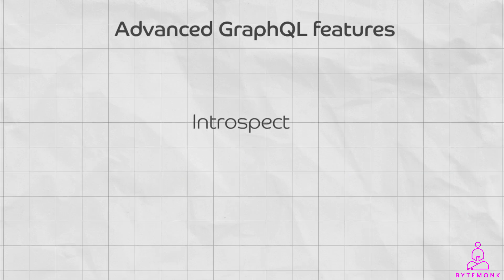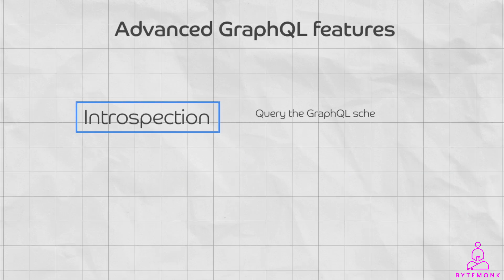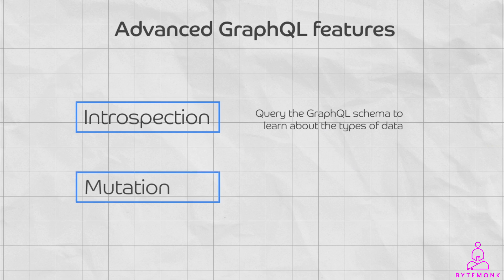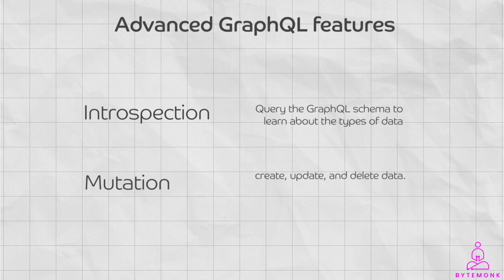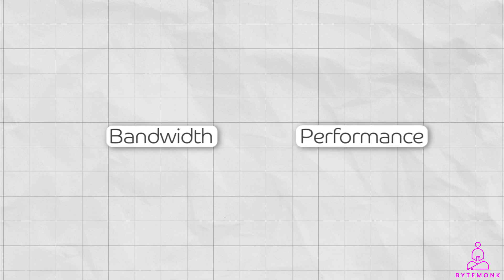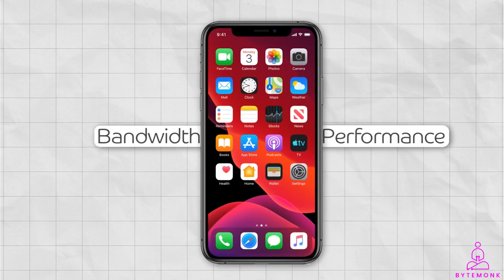There are advanced GraphQL features such as introspection, which allows developers to query the GraphQL schema to learn about available data types. Mutation is another feature that allows developers to create, update, and delete data. And because GraphQL allows you to request only the data you need, it can save bandwidth and improve performance, making it a good choice for building mobile and single-page applications.